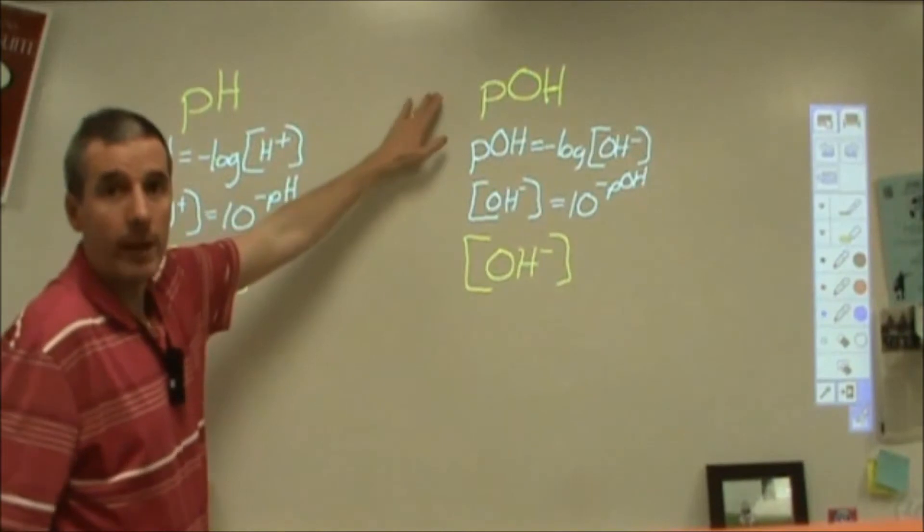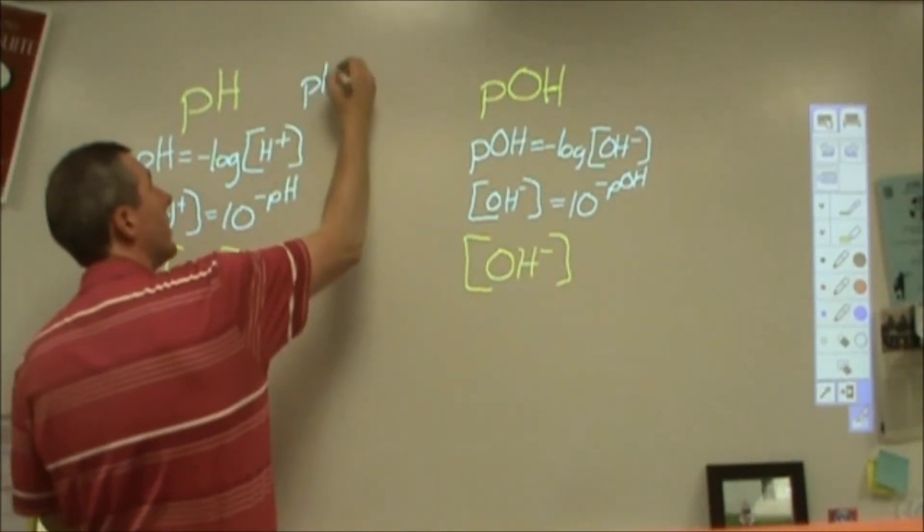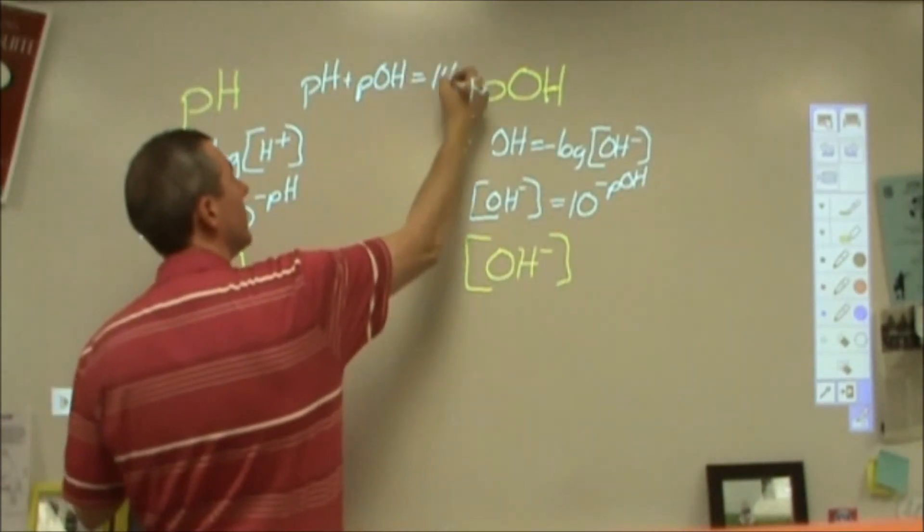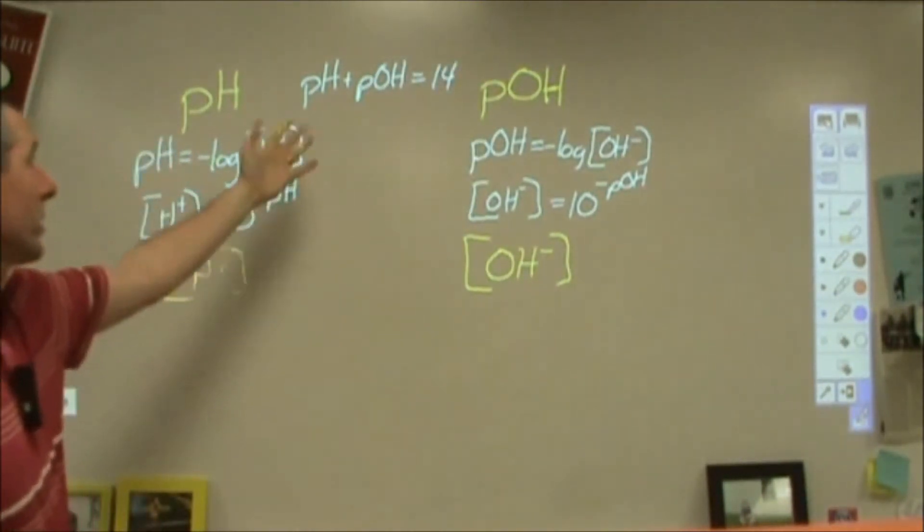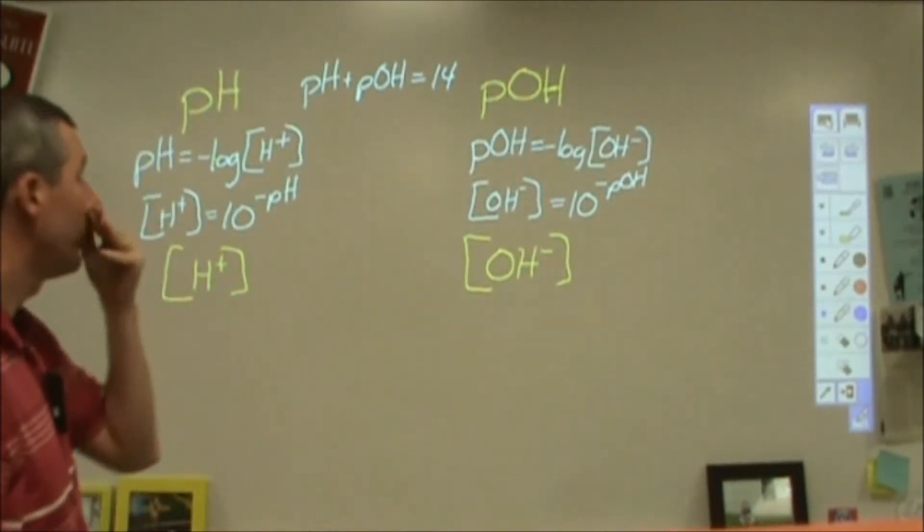These two are easy to relate because when you work all of the previous equation out in log form, it turns out that when you sum these two together they always add up to 14. So if the pH is 6, pOH will be 8. If the pH is 5.5, the pOH will be 8.5.